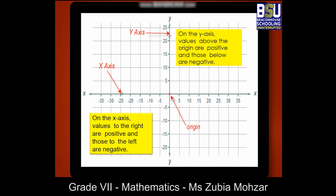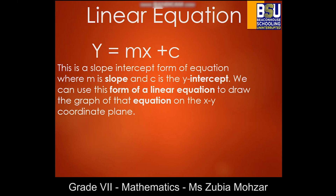On the y-axis, values above the origin are positive and those below are negative. Now look at this equation: y is equal to mx plus c. This is the general form of a linear equation, also called the slope-intercept form, where m is the slope and c is the y-intercept. In the next video you will learn how to draw a line graph and how to calculate gradient.